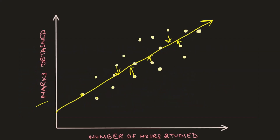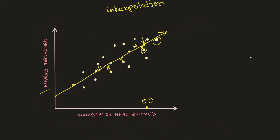Let's quickly understand the meaning of extrapolation. In this example, we had data points up to a certain range and a best fit line across all observations. If someone wants to predict how many marks can be obtained if the number of hours studied is, say, 50, we can say the predicted value falls close to the actual value. This prediction within the range of our observations is called interpolation.